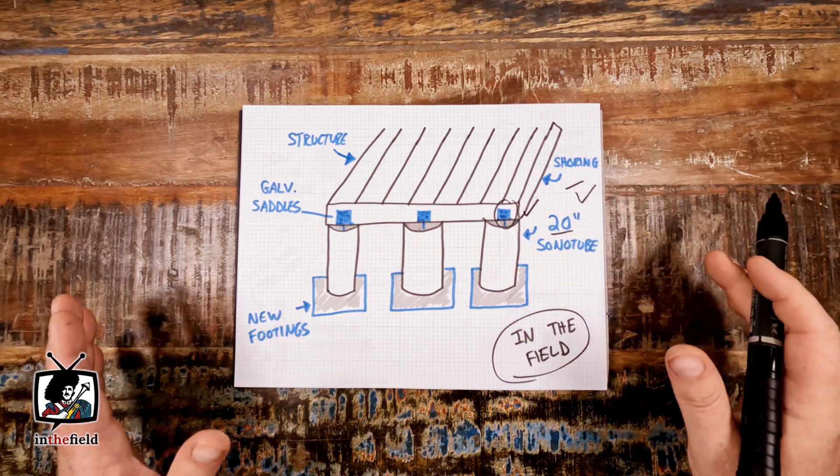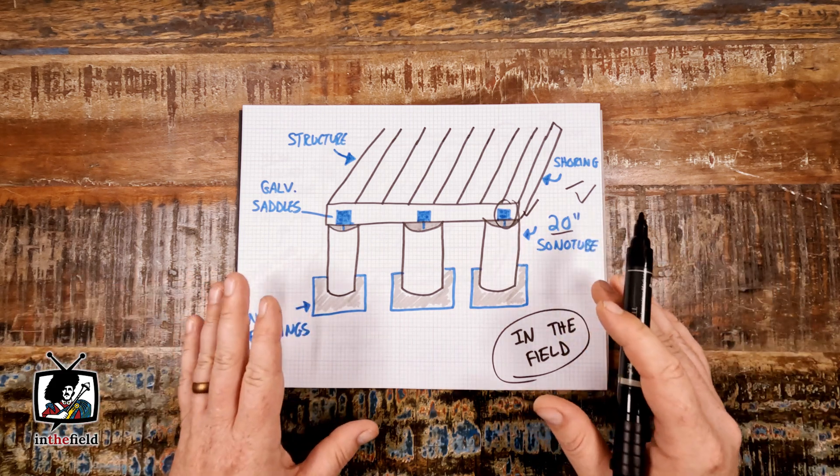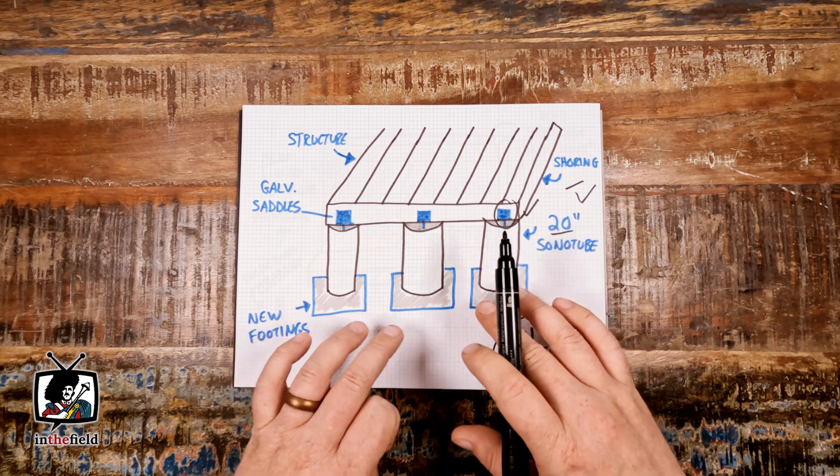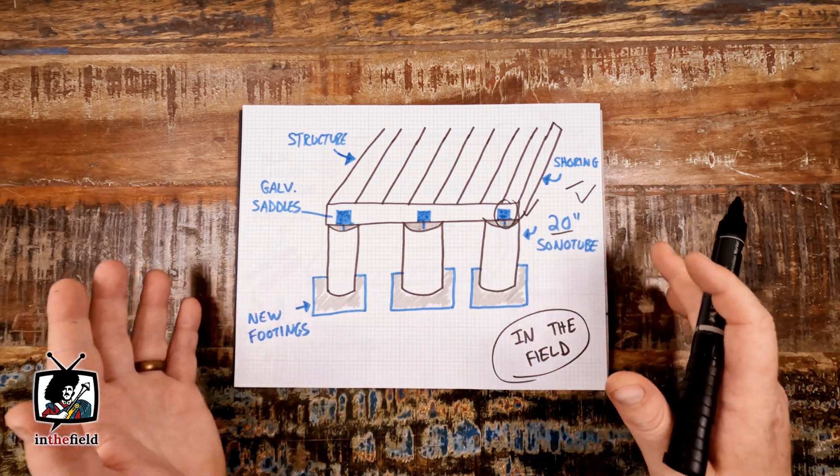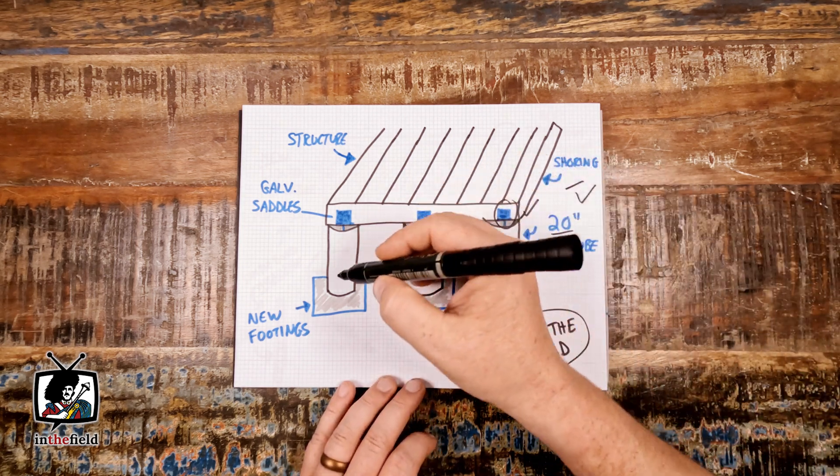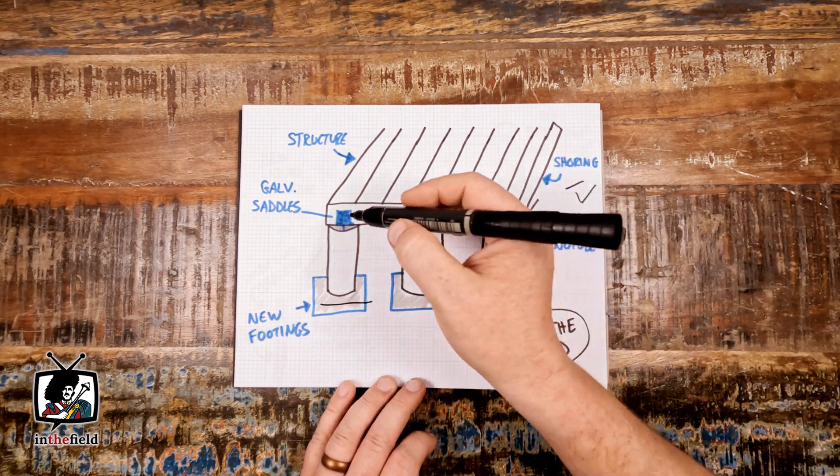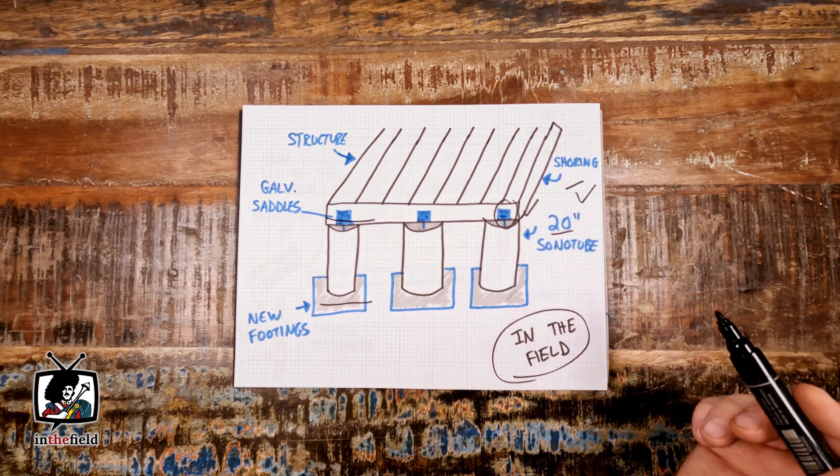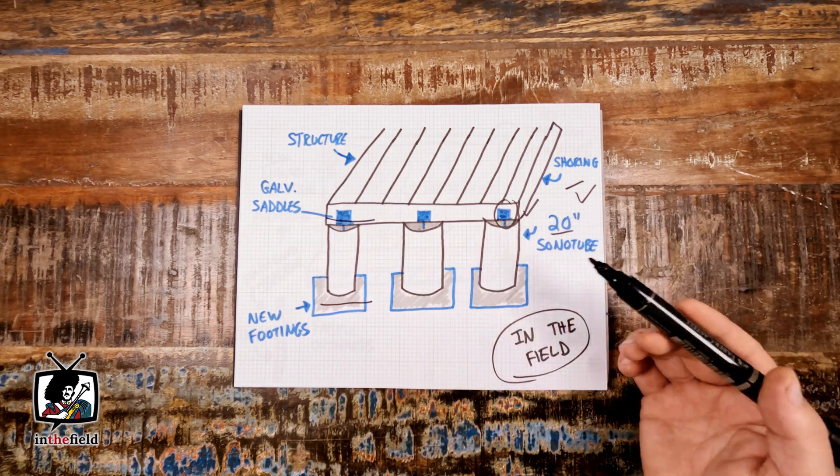Once everything was leveled and fastened and all the proper hardware and the three new 20 inch sonotubes were backfilled, we then filled the sonotubes with concrete so the sonotube connection directly from the base of the footing to the underside of the new timber supports were poured all in one shot.